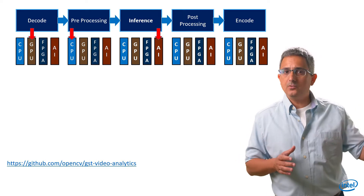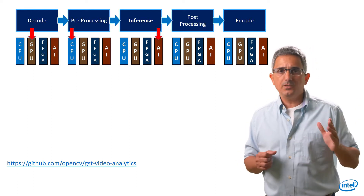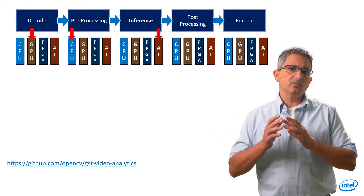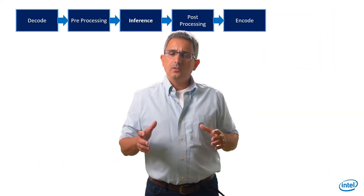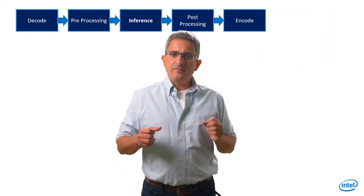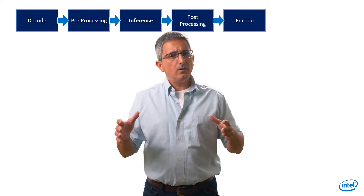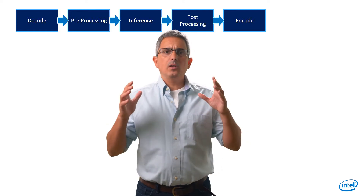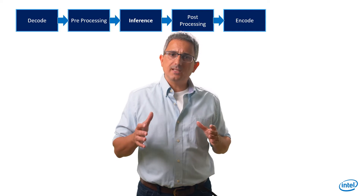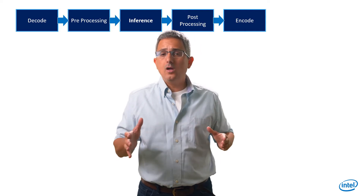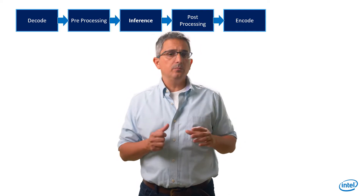theoretically each of these pipeline stages could run on a different device. We could run the decode on the GPU, the preprocessing on the CPU, and the inference on the VPU, and so on. But how can I tell if this workload can really work on my system without actually coding it? How can one predict what will be the expected frames per second, or how many video streams I can really process in parallel?